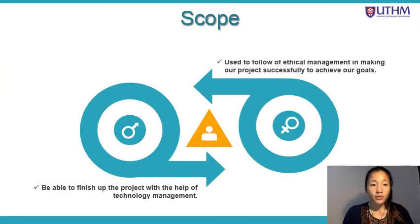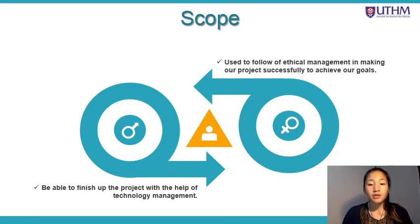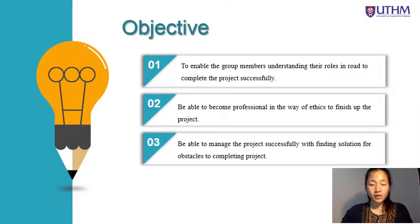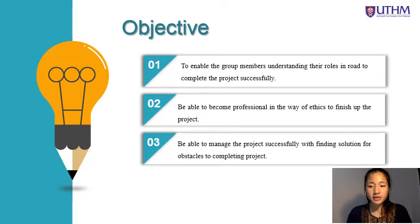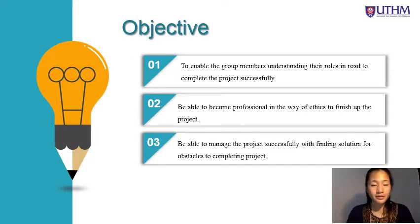Next is the scope of our ethics project. We have two scopes: first, to follow ethical management in making our project successfully achieve its goal; and second, to be able to finish the project with the help of technology management. We also have three objectives: first, to enable group members to understand their roles in order to complete the project successfully; second, to become professional in the way of ethics; and third, to manage the project successfully with funding solutions for obstacles. All of these objectives have been successfully achieved.